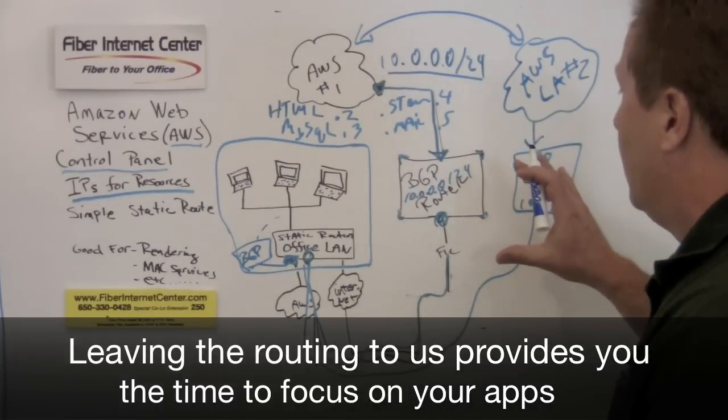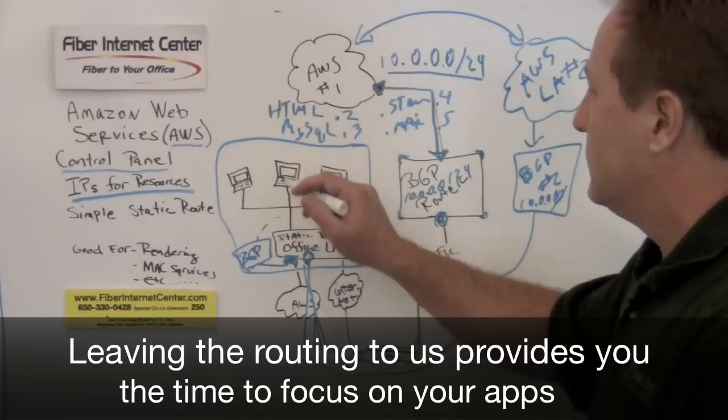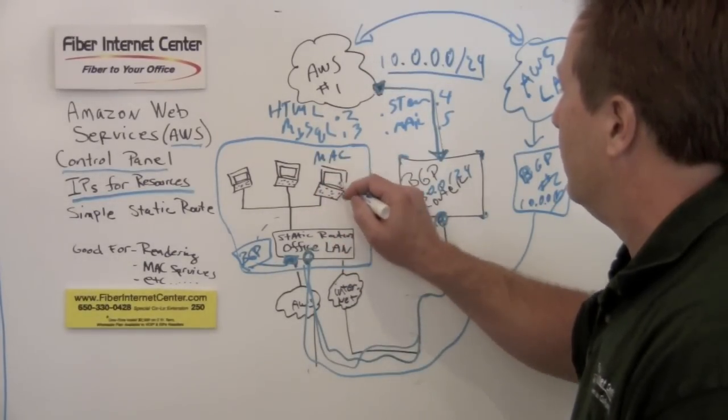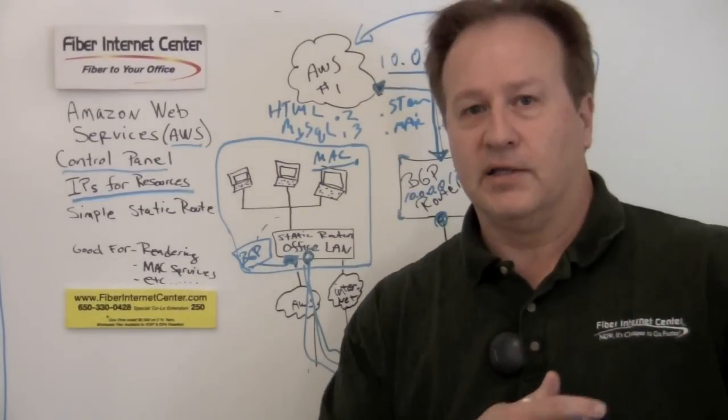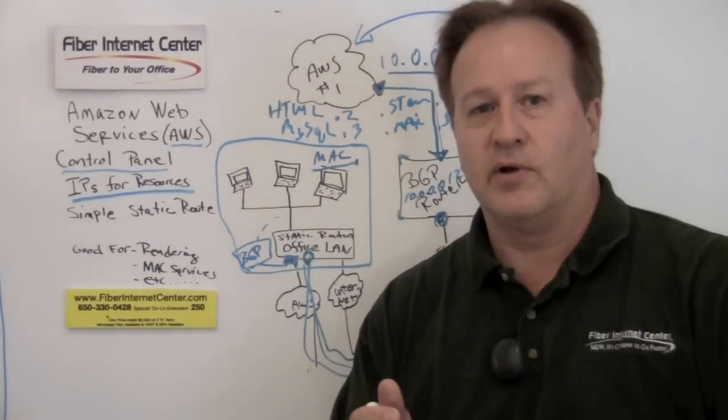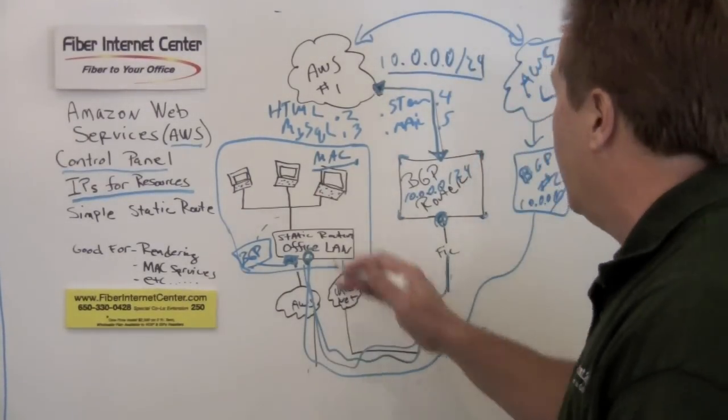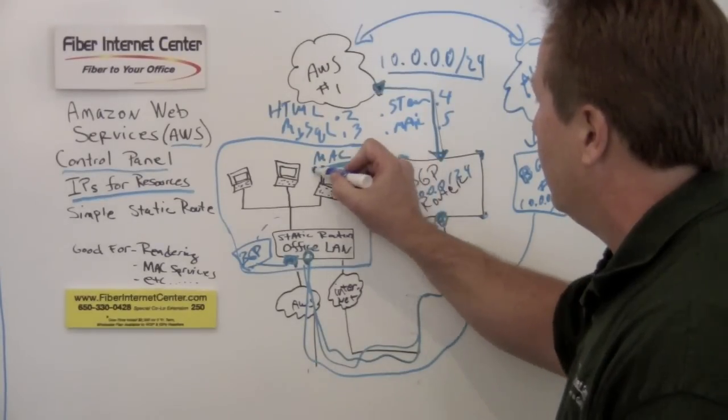And based on that, you can now go ahead in your office and say you've got some stuff that runs on a Macintosh computer. Well, they don't have an image for the Mac in the Amazon cloud, but you need some services or some things that run on a Mac in order to work and interact with your stuff in the cloud. Well, now you can do that through the Mac in your office.